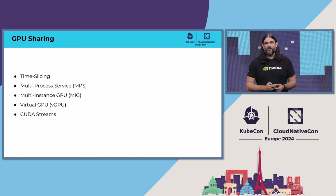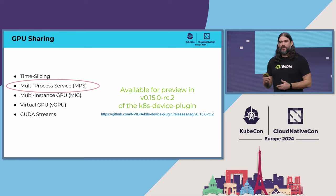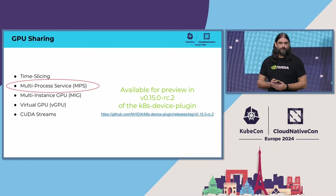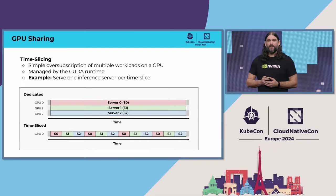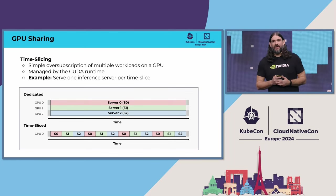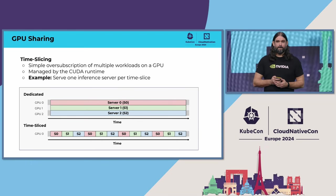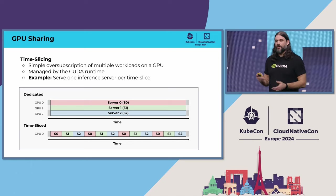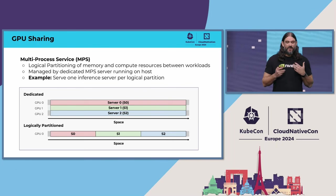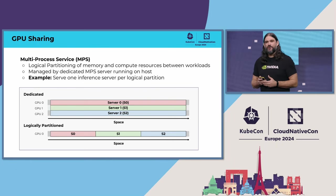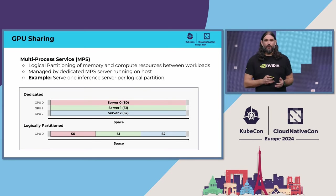Most of these techniques have been available to Kubernetes users for quite some time. The one exception being MPS, which we plan to release official support for in the next couple of weeks. Time slicing provides the ability to run several workloads concurrently on the same GPU rather than spreading them across multiple GPUs — each workload has access to the full capabilities of the GPU, but they alternate in time. MPS, in contrast, provides a method of space partitioning, where each workload remains resident on the GPU without being swapped off, but with only a fraction of its total memory and compute capabilities.